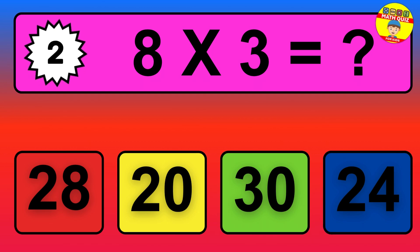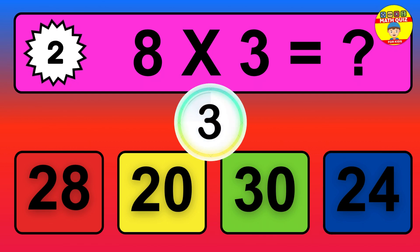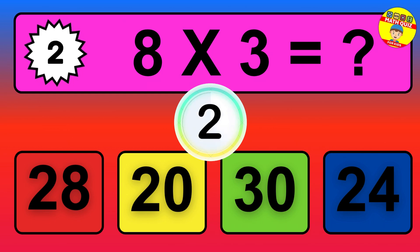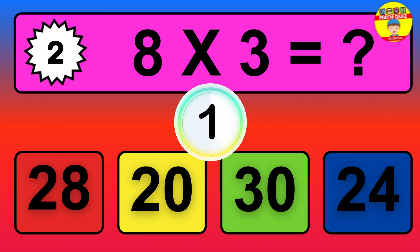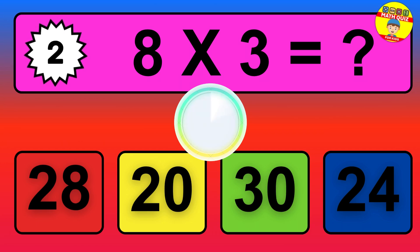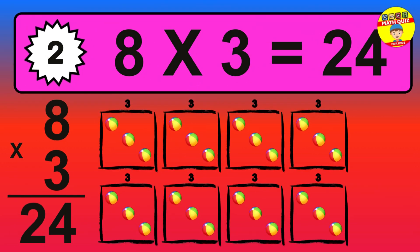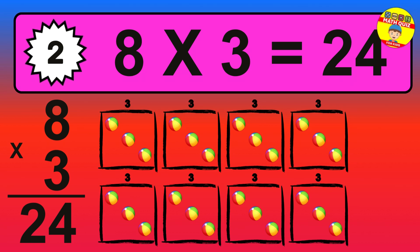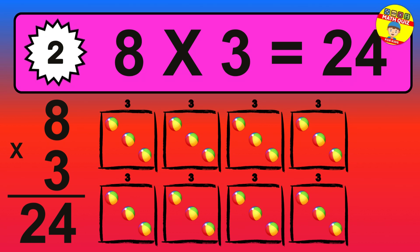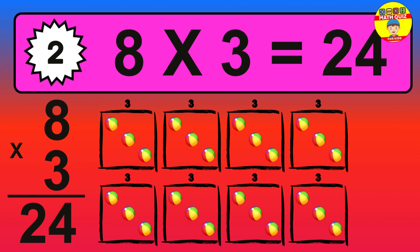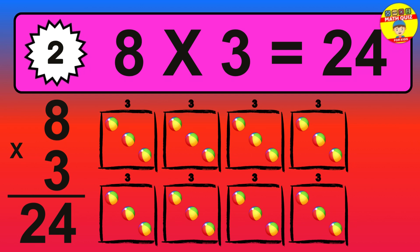Question two: eight times three equals what? The answer is eight times three is twenty-four. To calculate, we have eight groups with three balls each one. So how many balls do we have? Twenty-four balls.